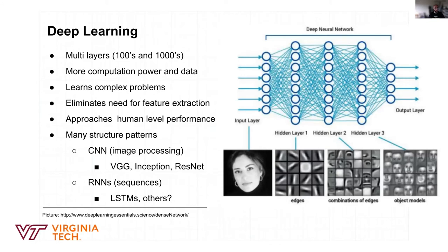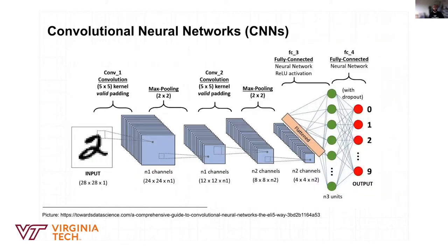There are many structural patterns for deep neural networks. Convolutional neural networks are used for image processing — you pass an image as a set of pixels and apply filters until you produce an output, such as recognizing a handwritten digit from zero to nine. Recurrent neural networks are used for sequence models.